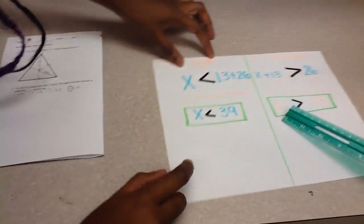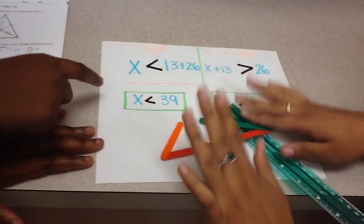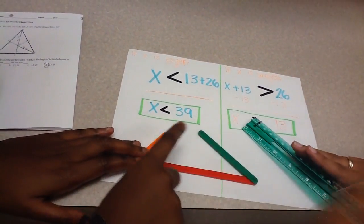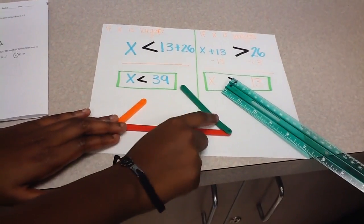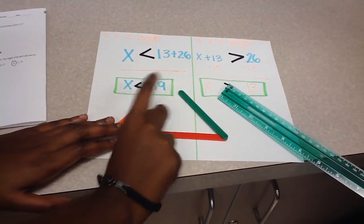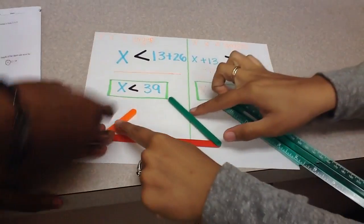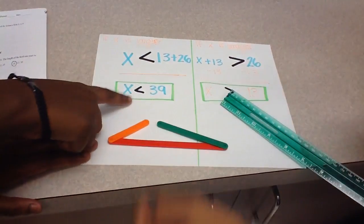If x is larger, then this will be x, this is 13, and this is 26. So the sum of 13 plus 26 will have to be greater than x, and 13 plus 26 equals 39.